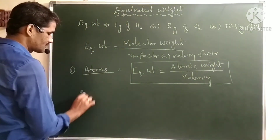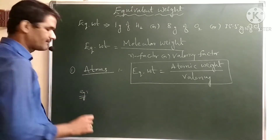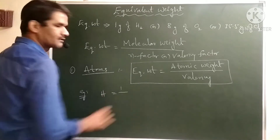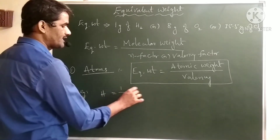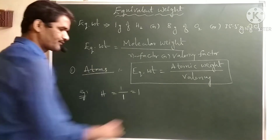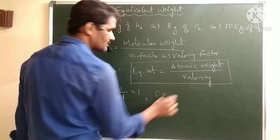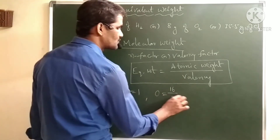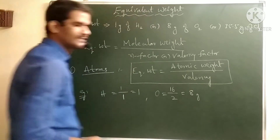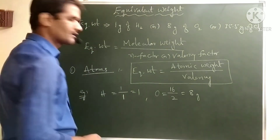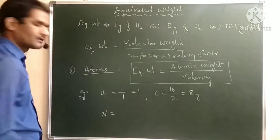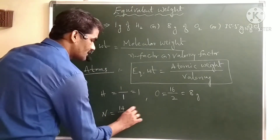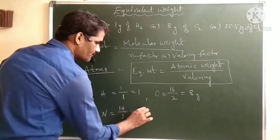Let us take some examples. For hydrogen, its atomic weight is 1 and valency is 1, so equivalent weight of hydrogen is equal to 1. For oxygen, its atomic weight is 16 and valency is 2, so equivalent weight is 8 grams. For nitrogen, atomic mass is 14 and valency is 3, giving 4.6 grams.